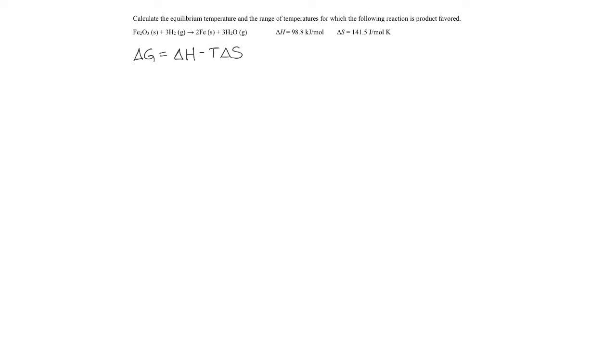At equilibrium, delta G will be 0, and if we want to solve for T, we'll substitute in the values for enthalpy and entropy, which are given. So delta H is 98.8 kilojoules per mole minus T times the entropy, which is in joules per mole Kelvin, so I'm going to convert that into kilojoules – 0.1415 kilojoules per mole Kelvin.